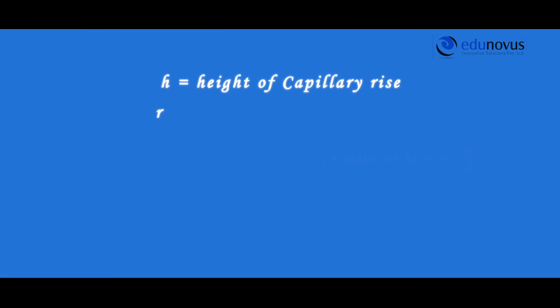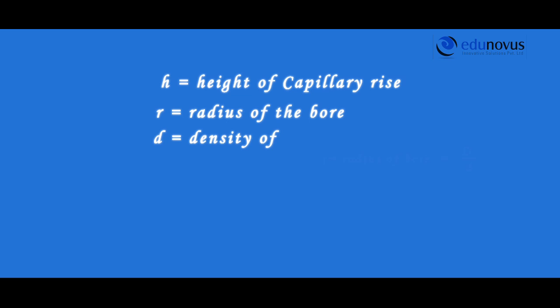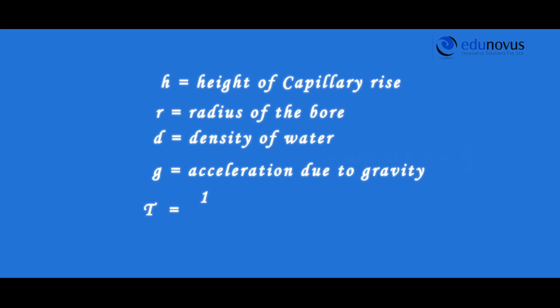Knowing the values of h (height of capillary rise), r (radius of the bore), d (density of water), and g (acceleration due to gravity), the surface tension of water T is given by: T = (1/2) × (h + r/3) × r × d × g, and its units are dyne per centimeter.